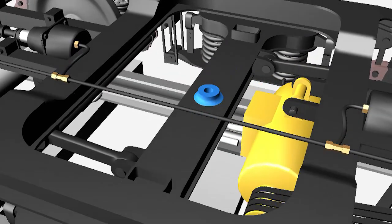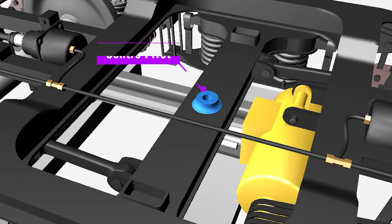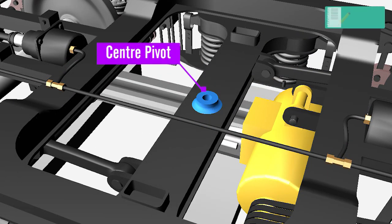Center Pivot: It joins the body with the bogey and transmits the tractive and braking forces on the bogeys. It allows for rotation of the bogey when the coach is moving on curves.